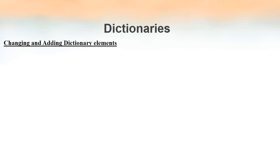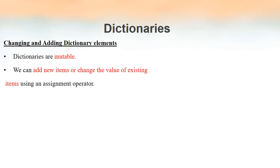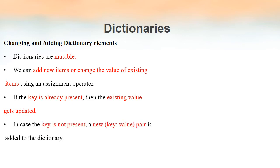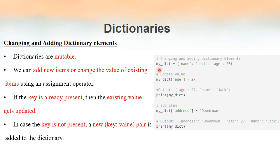Now we will see how to modify an existing key-value pair in a dictionary and how to add new key-value pairs. Dictionaries in Python are mutable — unlike tuples, once we have created a dictionary we can change it. Existing elements can be modified, or new key-value pairs can be added. This is done using the assignment operator. If the key is already present, the existing value gets modified; if the key is not present, a new key-value pair will be added.